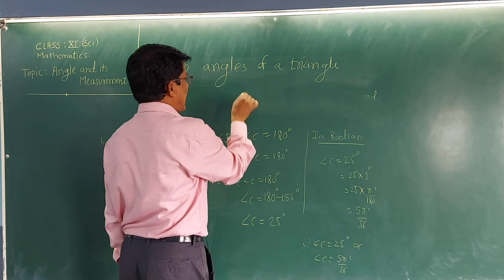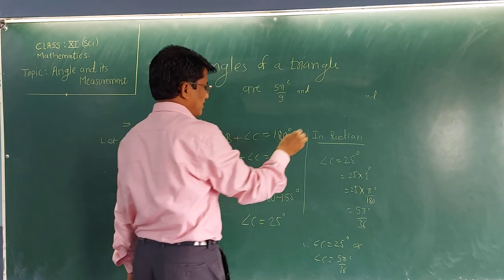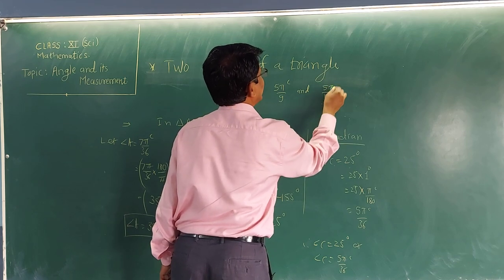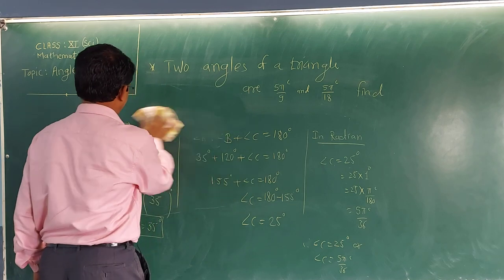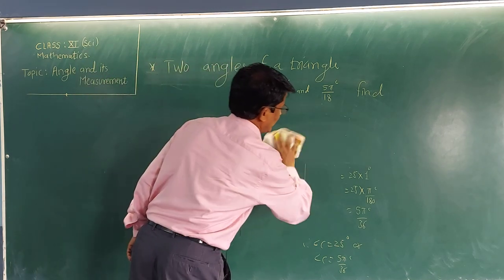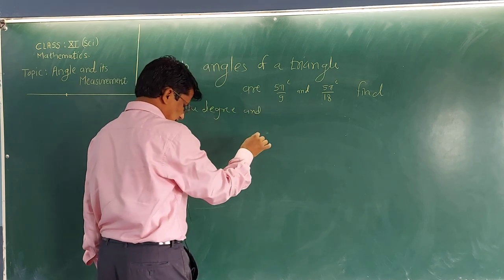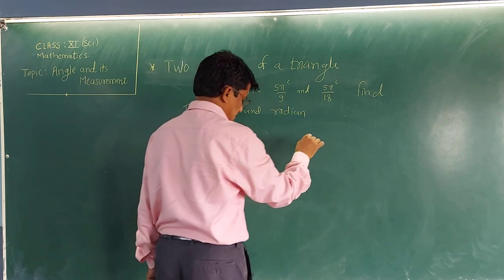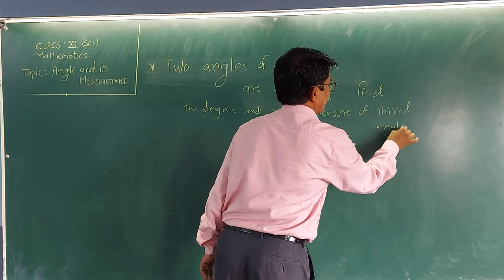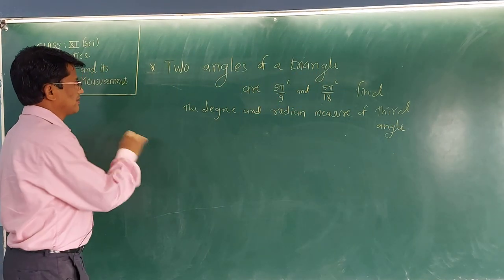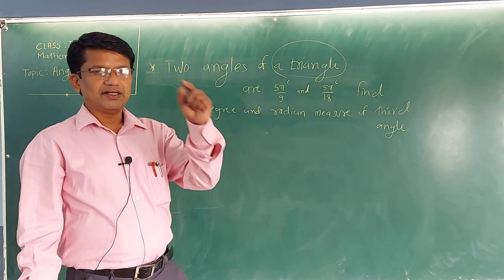Let us see one more example. Two angles of a triangle are π/9 radian and π/18 radian. Find the degree and radian measure of the third angle. This example again uses the same concept: first angle plus second angle plus third angle equals 180 degrees.